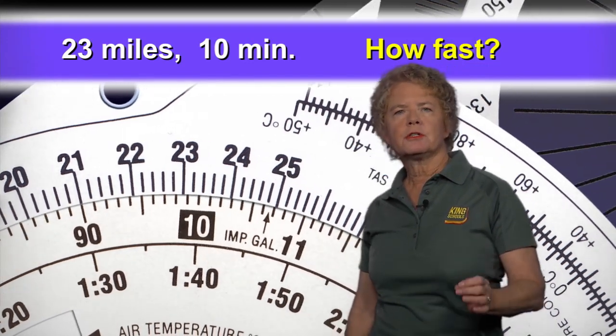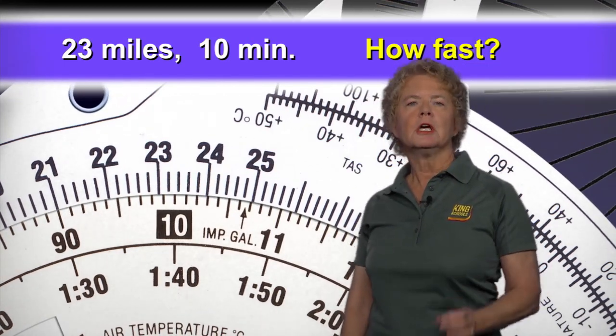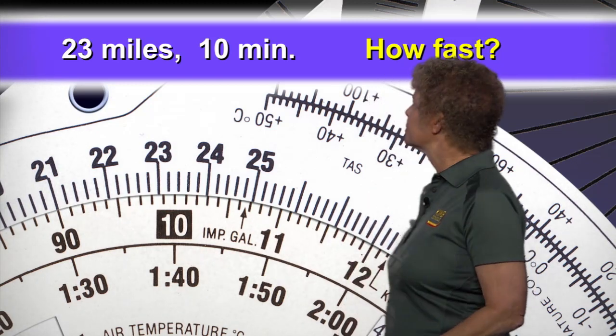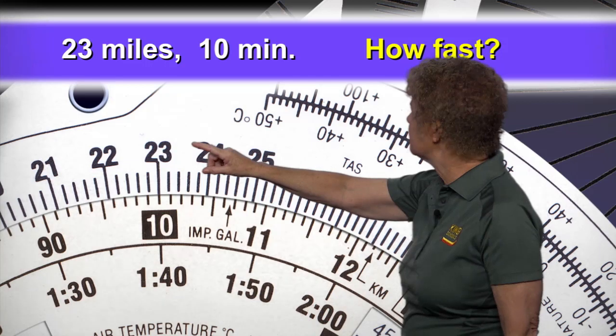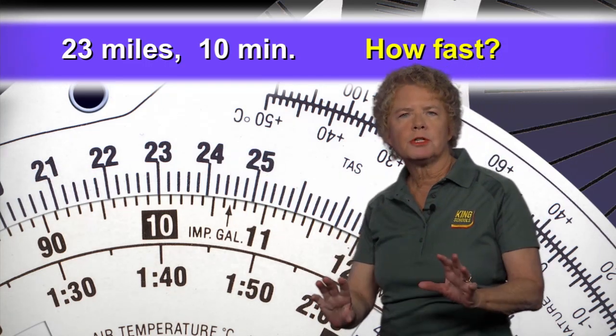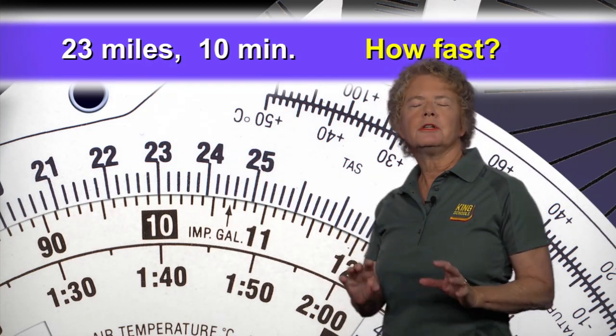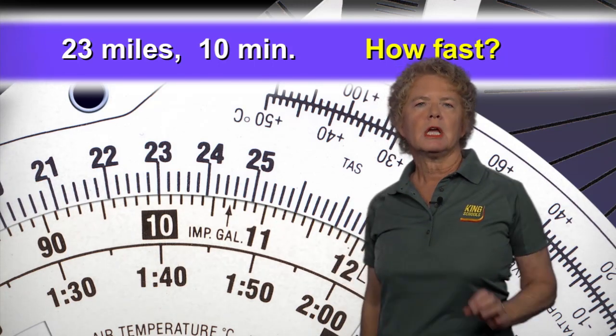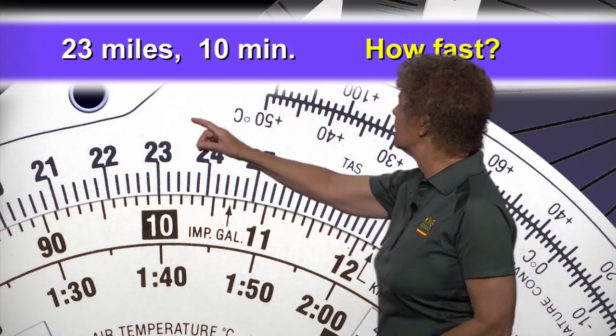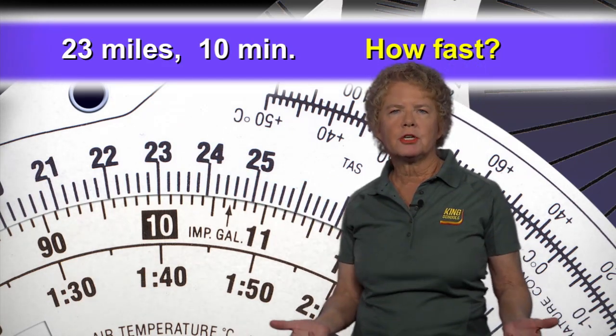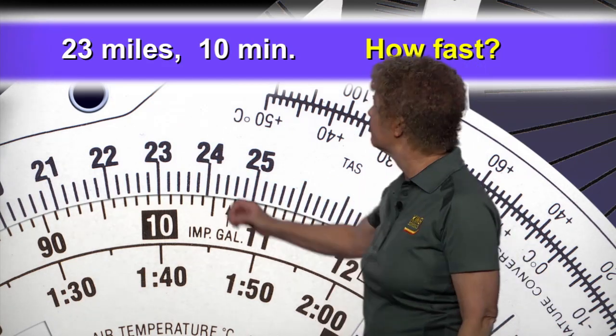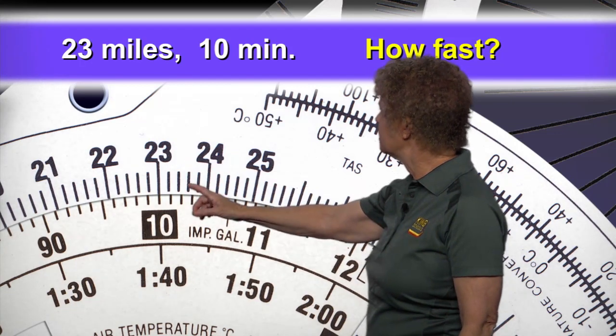Remember, distance is always on the outside scale, so find 23 miles on the outside scale. Once you've found 23 miles on the outside scale, rotate that inner dial until the 10 for 10 minutes is underneath the 23 on the outside scale. And what we've done here is set up the ratio. We've set up the ratio that we've covered 23 miles in 10 minutes.